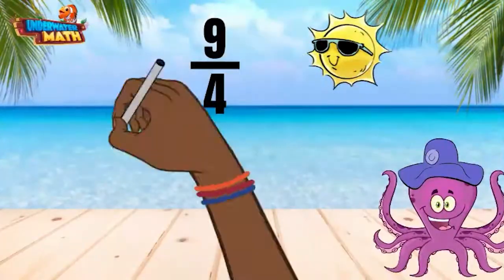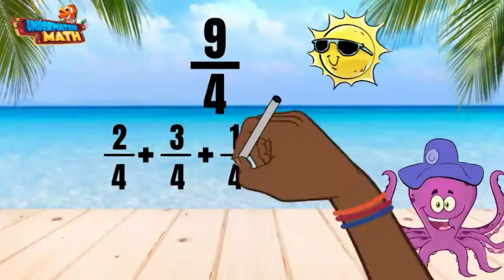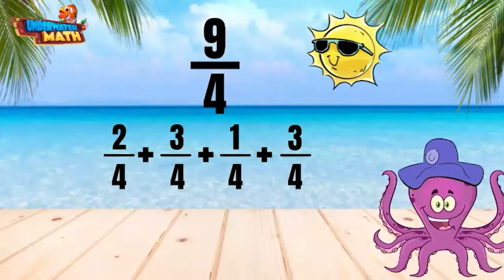9/4 can also be decomposed into a set of multiple numbers. Look at this example. When adding the numerators, do you still get a sum of 9? Let's check. 2 plus 3 equals 5, plus 1 is 6, plus 3 is 9. This expression has a sum of 9/4.